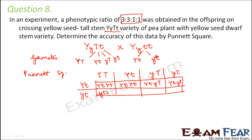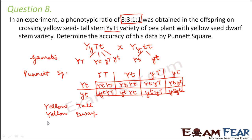Continuing the Punnett square with the yt gamete row: ytYT (=YyTt), ytYt (=Yytt), ytyT (=yyTt), and ytyt (=yytt). So these are all the possible combinations. Now we identify the phenotypes: yellow tall, yellow dwarf, green tall, and green dwarf. For yellow tall we need at least one capital Y and at least one capital T.